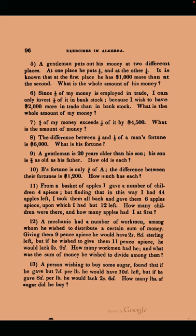'From a basket of apples, I gave a number of children four apiece, but finding that in this way I had 44 apples left, I took them all back and gave them six apples apiece, upon which I had but 12 left. How many children were there and how many apples had I at first?' That one's actually not bad because you might not know — you got a basket of apples, you might not know how many are in there. That's actually approaching realism somewhat.